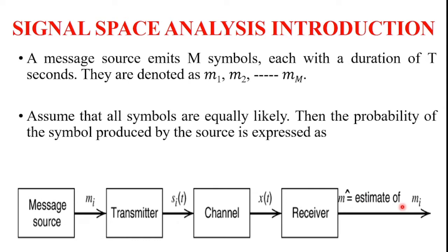A message source emits capital M symbols, each with a duration of capital T seconds. The message signals are denoted as m1, m2, m3, and so on up to mM. Assume that all these symbols are equally likely, so the probability of each symbol produced by the source is 1 over M.